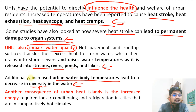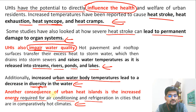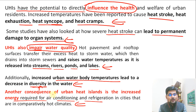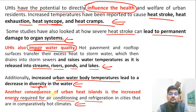Another consequence of urban heat island is increasing the energy required for air conditioning and refrigeration, as already discussed. These are some of the most important impacts to remember while discussing urban heat island as a phenomenon — it has adverse impacts not just directly but also several indirect impacts all around the human ecosystem. Remember, it is an alteration to the natural system, built by human beings.